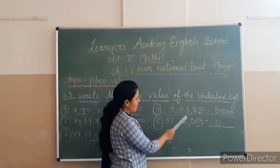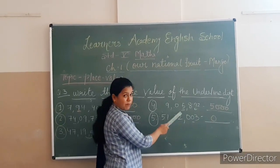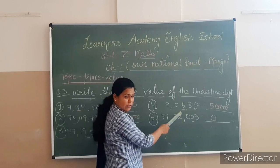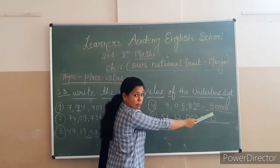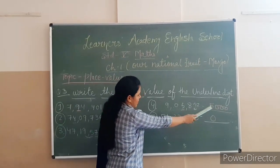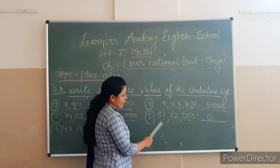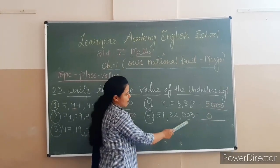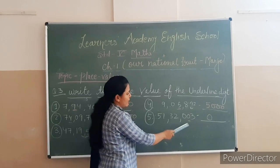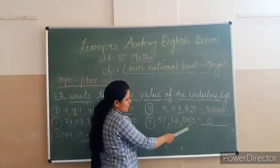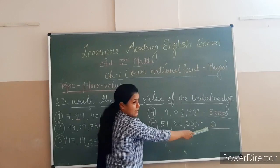Number four, in 5,892, the underlined digit is 5, and this is in the 1000s position, so it will be multiplied by 1000, giving 5000. And the last one, in 51,32,300, the underlined digit is 0, and the place value of 0 is 0, so multiplied by 0.